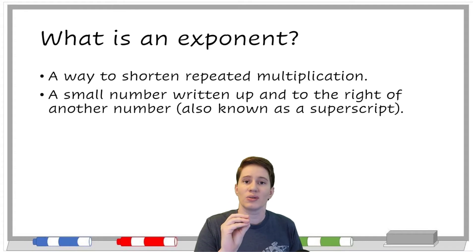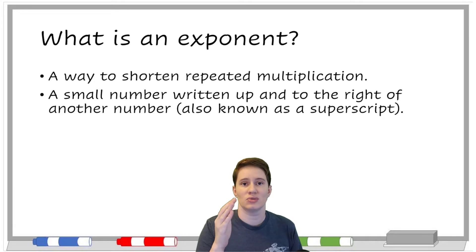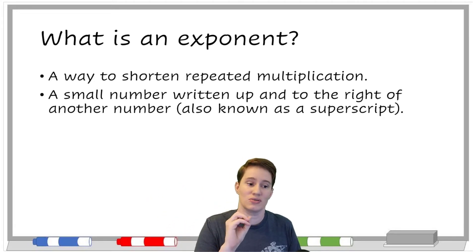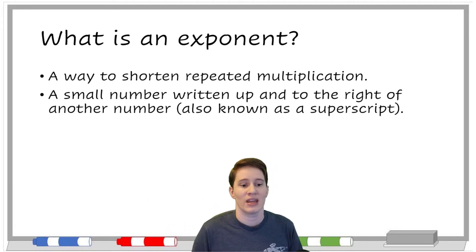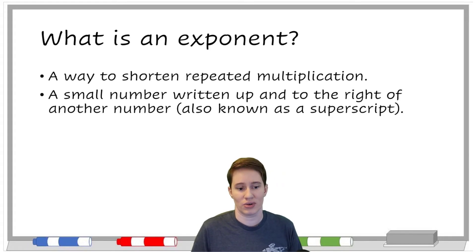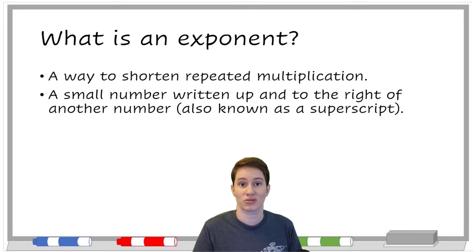And that only works if it's repeated multiplication. So if you have 2 times 2 times 2 times 2 times 2, for instance, you can shorten that by using an exponent. What it looks like is a small number written up and to the right of another number, and we call this a superscript.